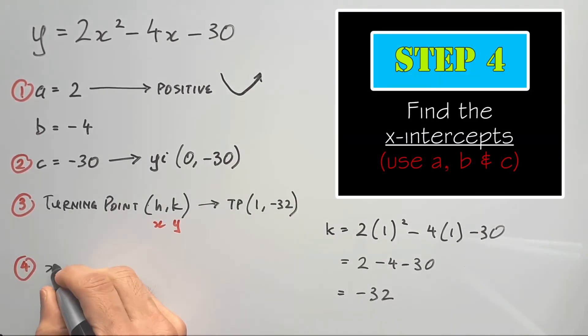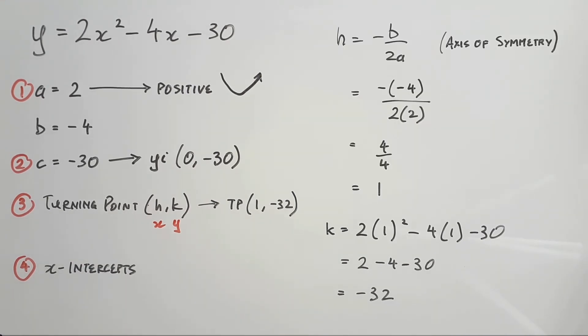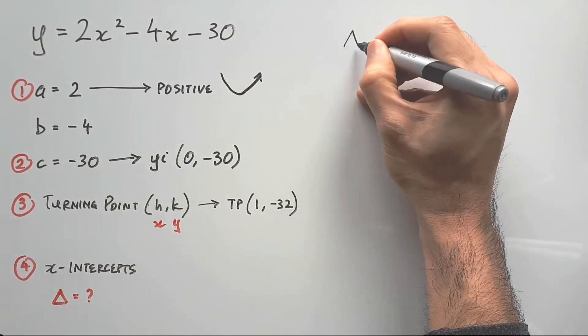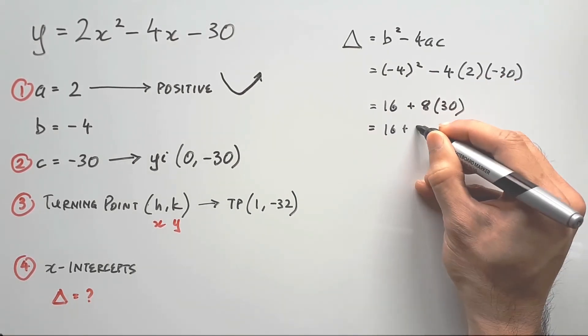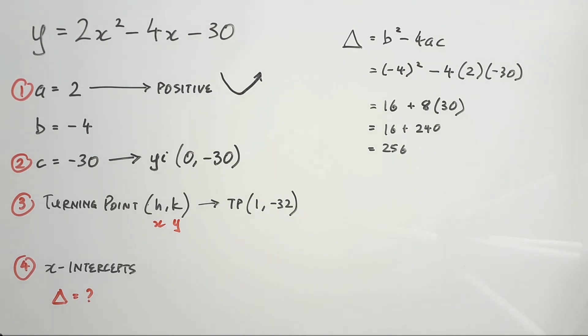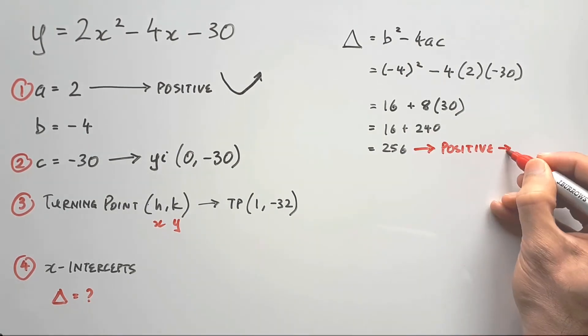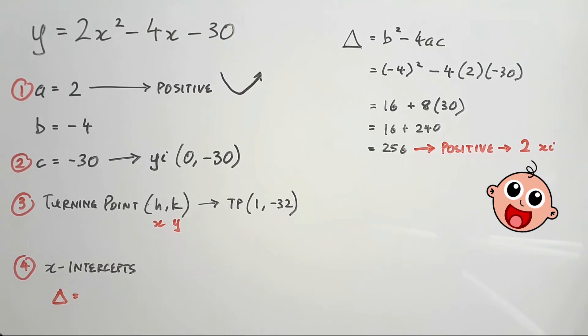Step number 4: Find the x-intercepts. In the standard form, this is the most difficult thing to find, which is why I left it for last. Firstly, find the discriminant using b squared minus 4ac. This will tell us if x-intercepts even exist for this parabola, so as to not waste our time if they don't. Plug in our ABC values and it works out to be 256. This value is positive, meaning there are 2 x-intercepts, meaning we're not wasting our time.